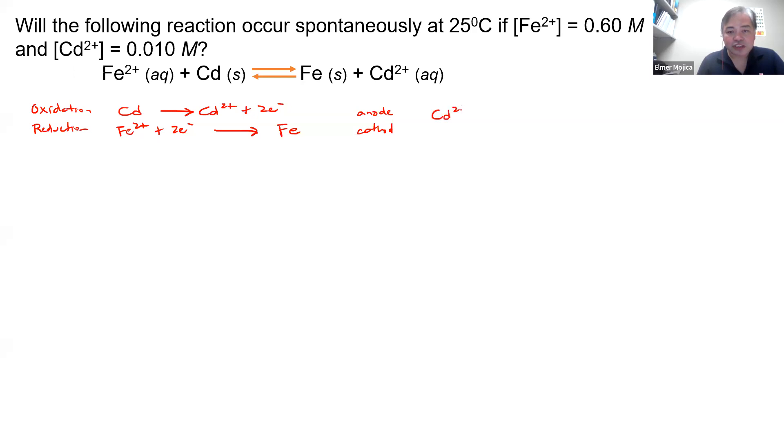So the reduction potential for this, we're going to do this. Cadmium would have a reduction potential of around negative 0.40 volts, while Fe2+ plus two electrons producing Fe will give you around negative 0.44.